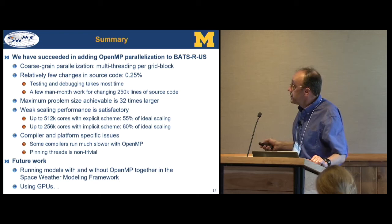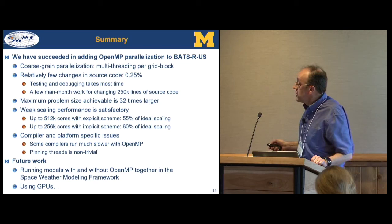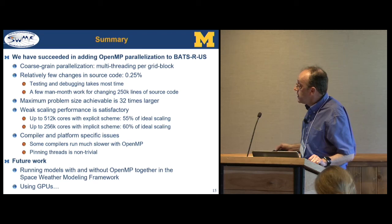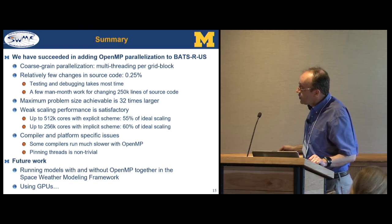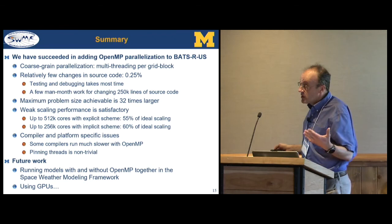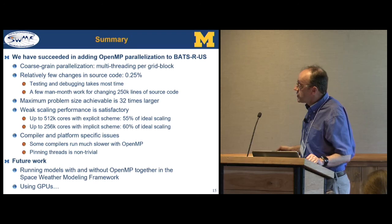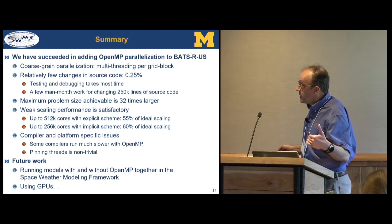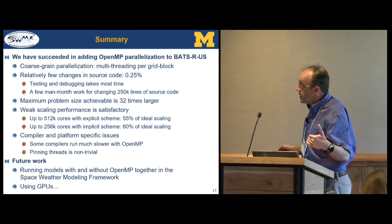In summary, we succeeded in adding OpenMP parallelization to the BATS-R-US code. Now pretty much all our nightly testing is done with OpenMP using coarse-grained parallelization. Our maximum problem size increased by a factor essentially equal to the number of threads — 32 on this machine — and we got good weak scaling. We found some compiler and platform-specific issues. Future work is to use OpenMP in the Space Weather Modeling Framework, generalizing it so some models use OpenMP and others use pure MPI. And hopefully in the future, we can use GPUs as well.